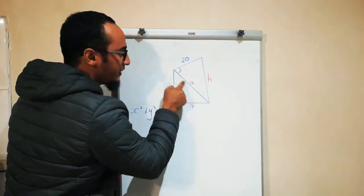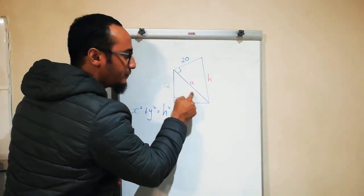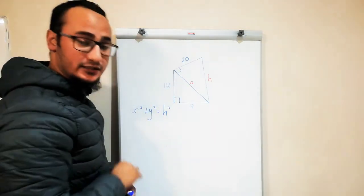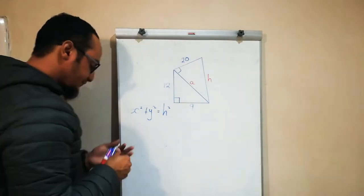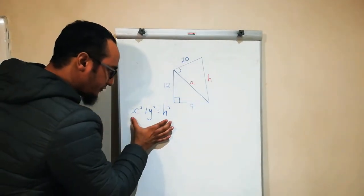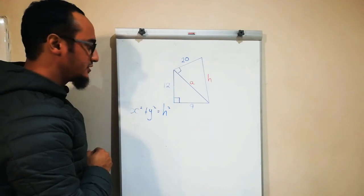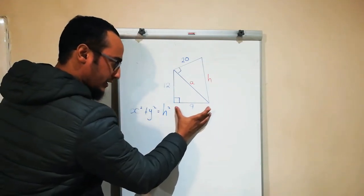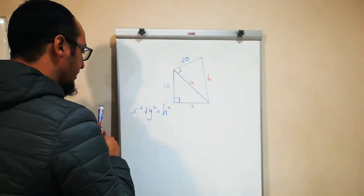So in order to calculate h over here, I first need to calculate the value of a, which is my hypotenuse of my first triangle. First I write down my formula, then I substitute.